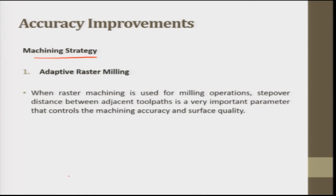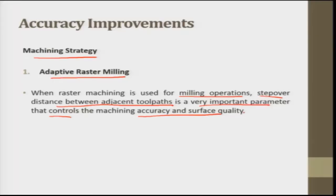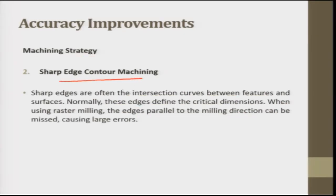The machining strategy is very important for finishing additive manufacturing parts considering both accuracy and machine efficiency. Adaptive raster milling of the surface, hole drilling, and sharp edge contour machining can fulfill the needs of most parts. In adaptive raster milling, the step-over distance between adjacent toolpaths is a critical parameter controlling machining accuracy and surface quality — higher accuracy and surface quality require a smaller step-over distance.